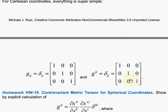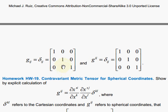Now, here is a very simple example. In Cartesian coordinates, the metric tensor is all ones, and the inverse, all ones. Isn't that nice?